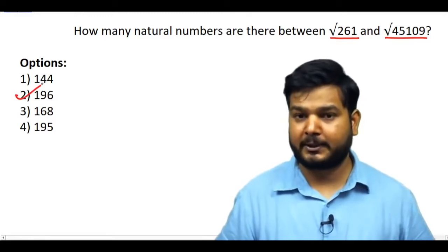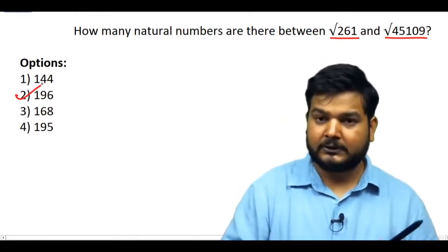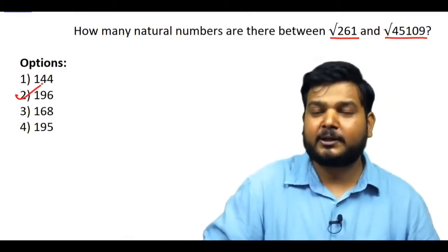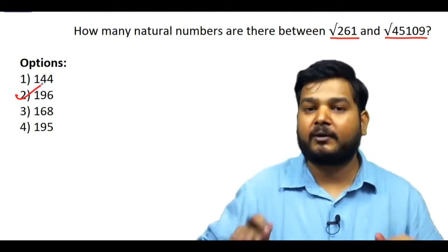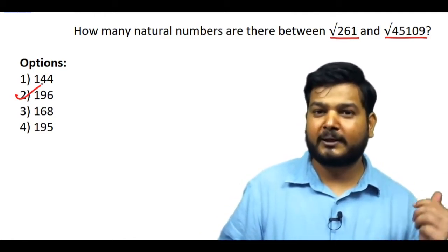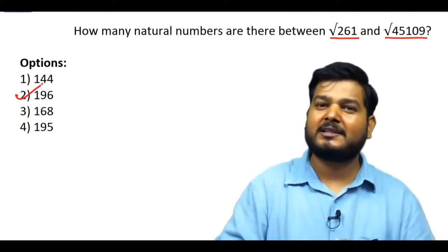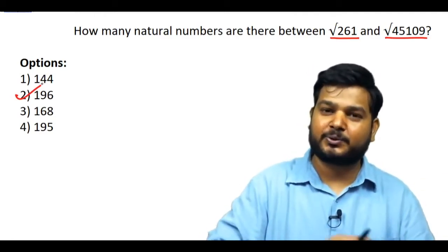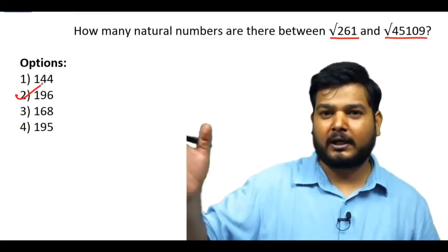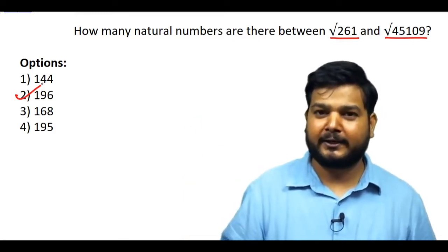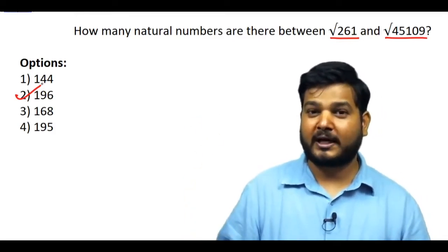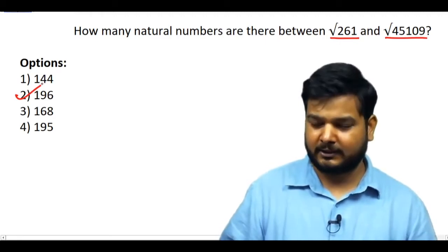How will you solve this? This is the Art of Calculation. People study Vedic Mathematics and there are so many methods on YouTube about how to find square roots. But if a number is not a perfect square, the square root will be a decimal.